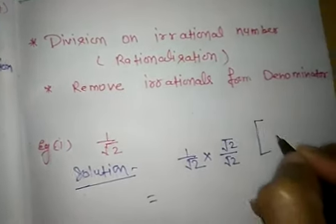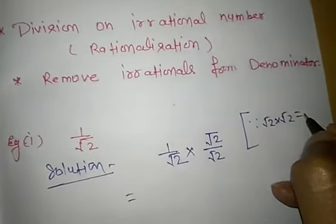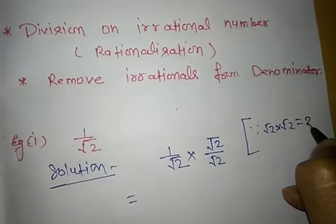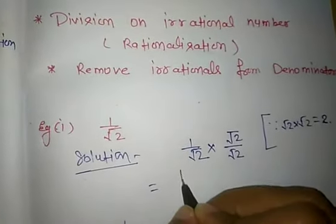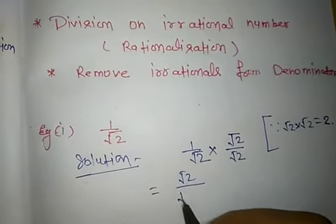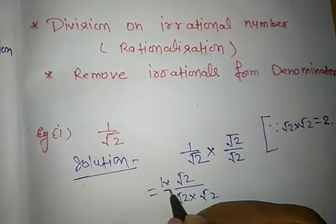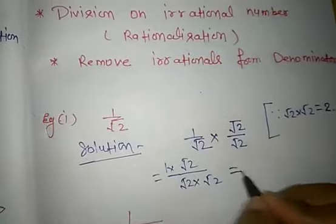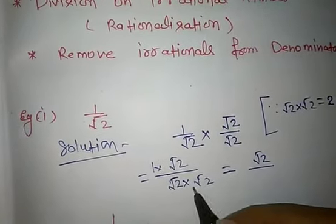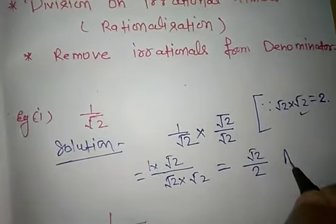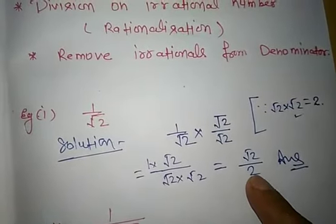Because we know that if we multiply root 2 by root 2, we get 2. That means the roots are removed. So we get 1 times root 2 divided by root 2 times root 2, which equals root 2 by 2. As you see, the irrational from the denominator is removed. Now, next example.